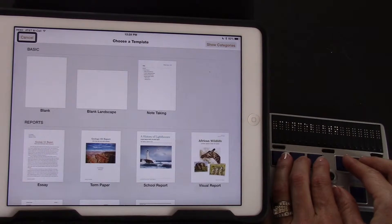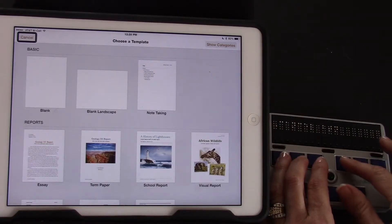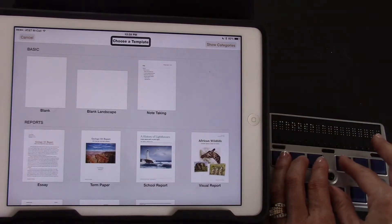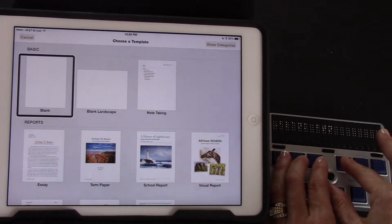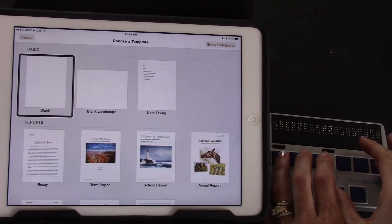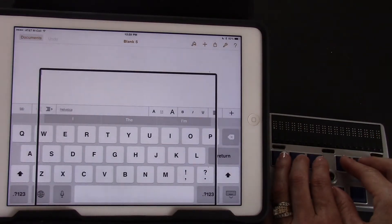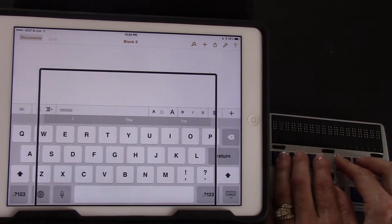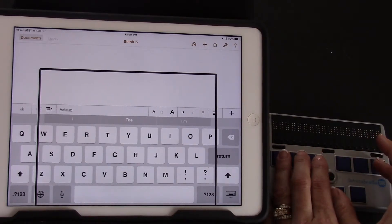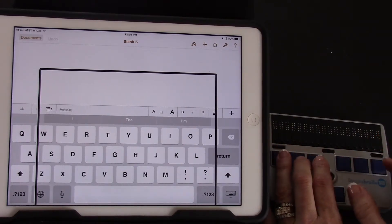Choose a template. Cancel button. So I need to choose a template. I'm going to use four space to move over to blank. Choose a show category. Basic. Blank button. And select three six space. Selected blank. Text field is editing word mode. I'm going to go ahead and copy using V chord one two three six space.